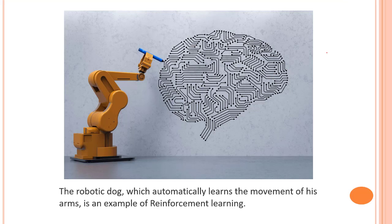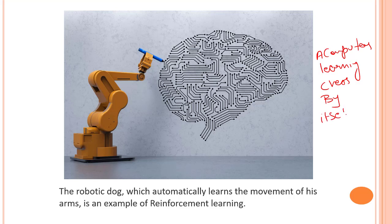The best example will be a computer learning chess by itself rather than passing any data. We just let it know that it played this move and there was a good reward, so it will learn that this technique is good. That's where reinforcement learning comes into play.